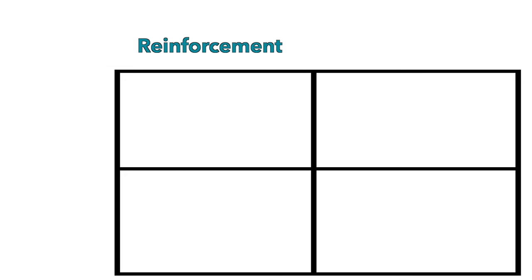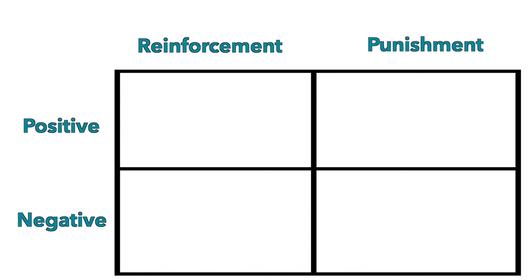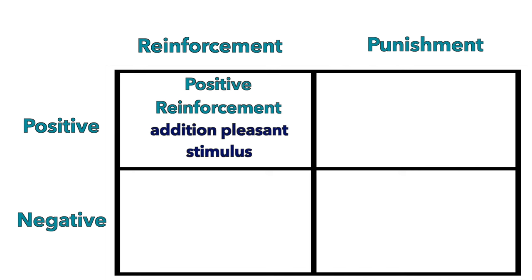So let's break down operant conditioning. Operant conditioning can be divided into two categories: reinforcement and punishment. Those categories can be further divided into positive and negative. Reinforcement is defined as something that strengthens the behavior. Reinforcement can be positive, and positive reinforcement means the addition of a positive stimulus. That's what you see with Skinner's box — the addition of a positive stimulus is that the rat gets food.